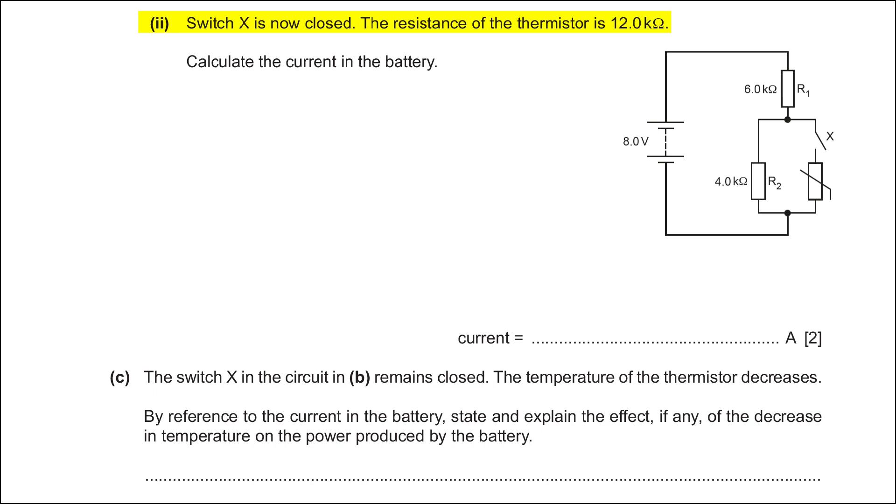Part 2: Switch X is now closed. The resistance of the thermistor is 12 kOhms. Calculate the current in the battery.